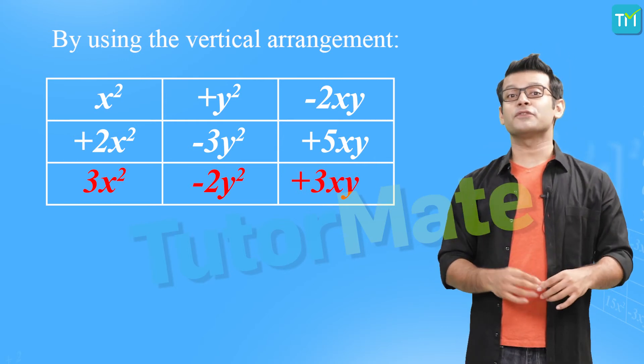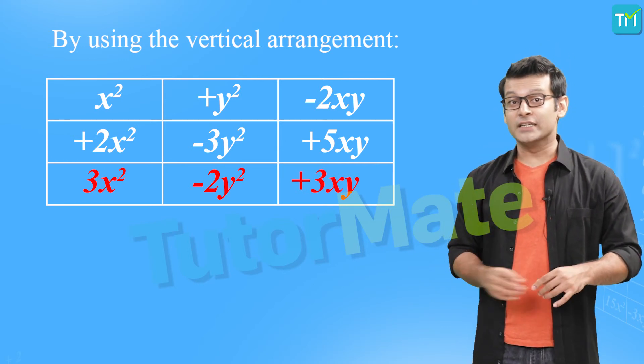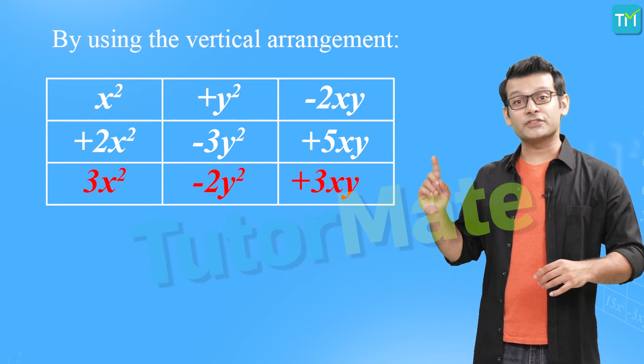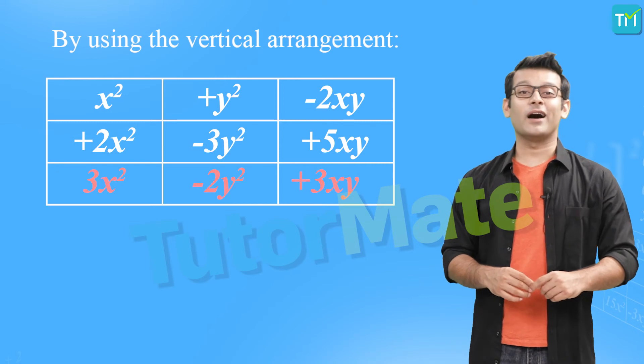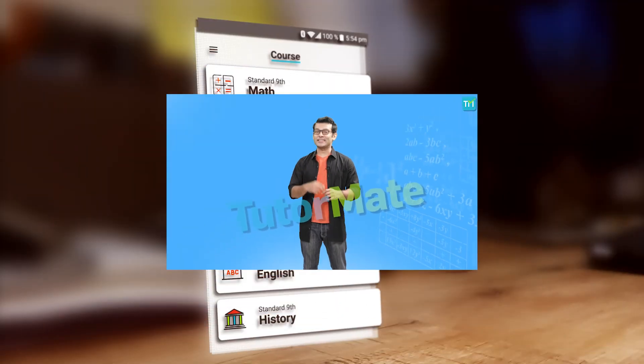So the final answer is 3x square minus 2y square plus 3xy. Addition and subtraction of algebraic expressions is pretty simple and straightforward — all we have to do is ensure that the like terms are together and the signs are correct. Algebraic expressions can also be multiplied together, but multiplication is something we will save for the next session.